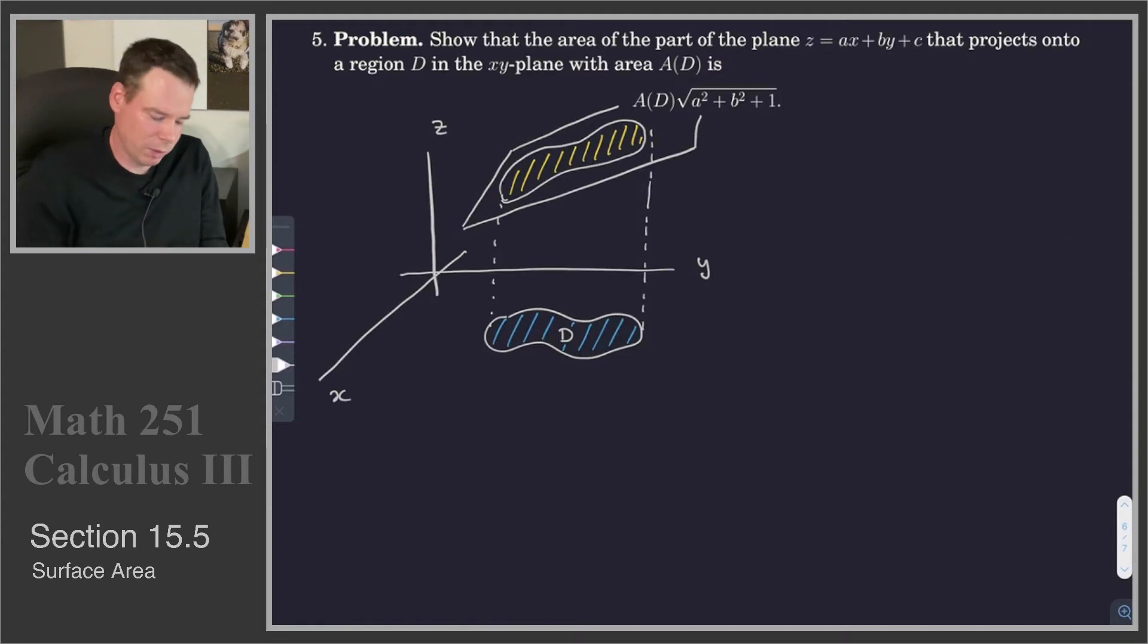But its normal vector we can read right off of the equation of the plane. The equation of the plane, if we want to read its normal vector off, we would rewrite it as ax plus by minus z is equal to negative c. And so the normal vector to the plane would be given by (a, b, -1).